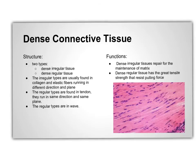Two types of dense connective tissue are found: dense irregular tissue and dense regular tissue. Dense irregular tissue contains collagen and elastic fiber running in all different directions and planes. Dense regular tissue contains fibers running in the same direction and plane, the opposite of irregular type. Irregular types are required to repair and maintain the matrix, while regular types have big tensile force that resists pulling force.